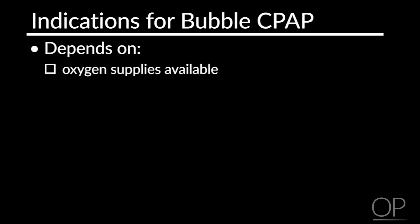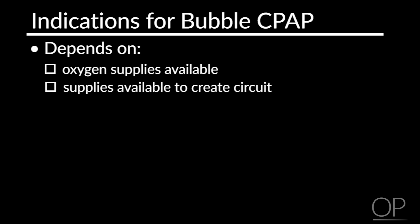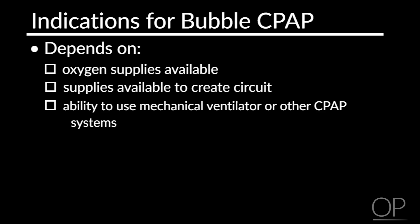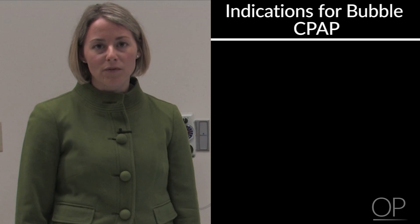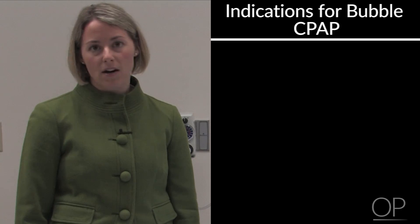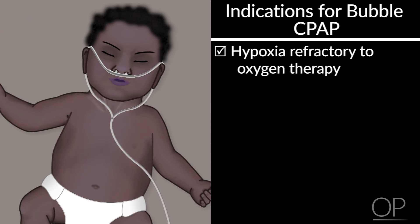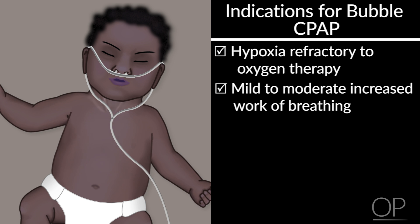The decision will depend on the amount of oxygen supplies you have available, the supplies to create the circuit, your ability to use a mechanical ventilator or other CPAP systems, and your ability to have a fresh oxygen supply for all necessary patients. In some hospitals, it's helpful to use this on patients that are hypoxemic, refractory to oxygen therapy, or with mild to moderate work of breathing. In those patients, it may be helpful to step up from oxygen therapy and try bubble CPAP to improve work of breathing and gas exchange.